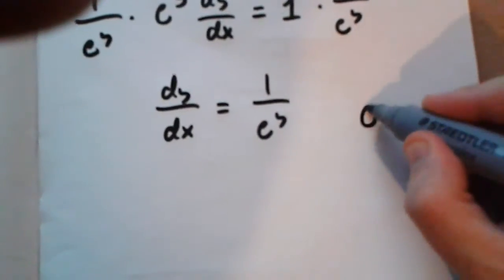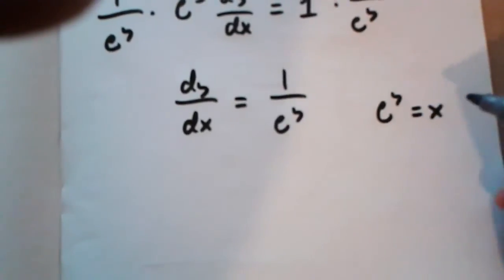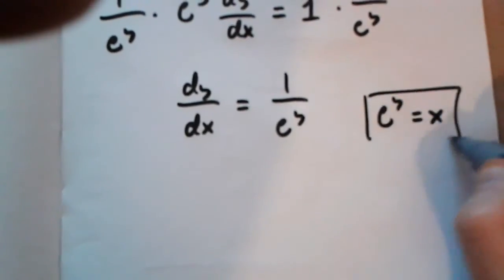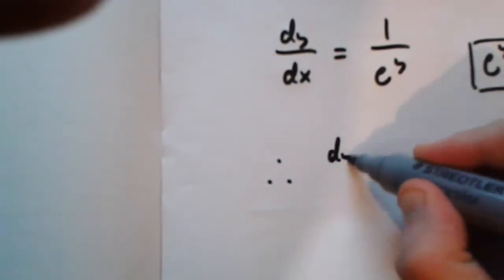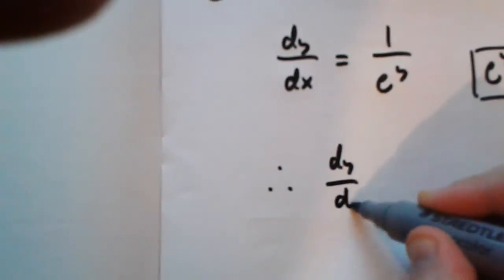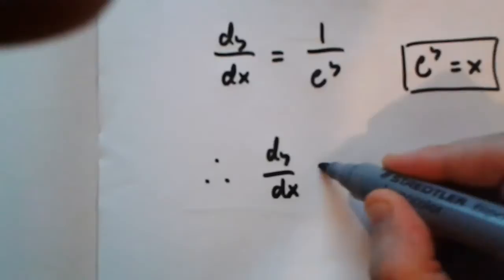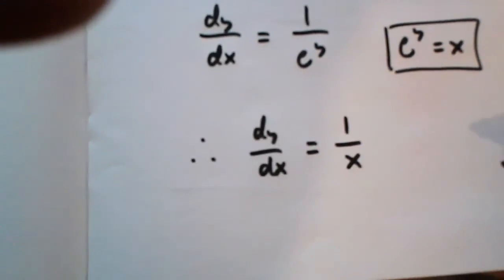But, we know that e to the power of y is x, as you can see over here. Therefore, dy over dx is equal to 1 over x.